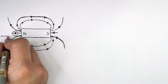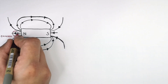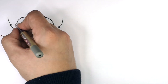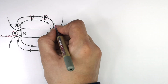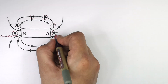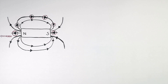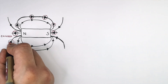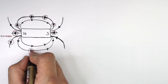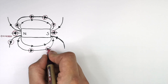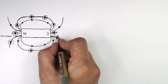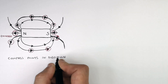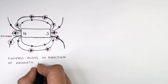The compass will point away from north towards south in the direction of the magnetic field lines. So the compass always points towards the south direction of the magnetic field line it is in — the compass points in the direction of the magnetic field it's in.